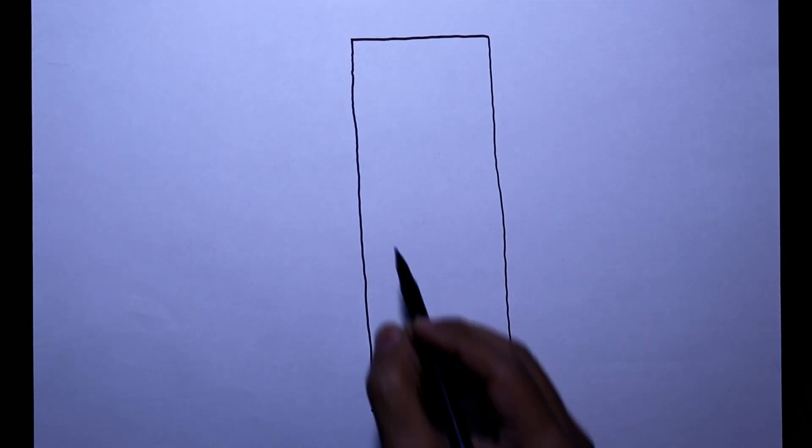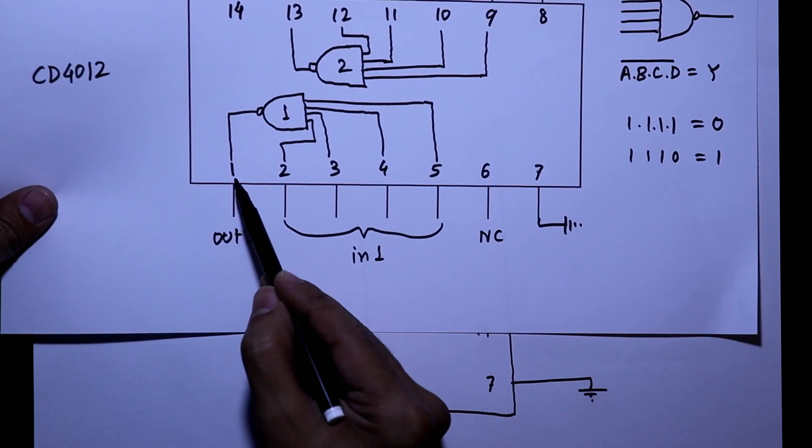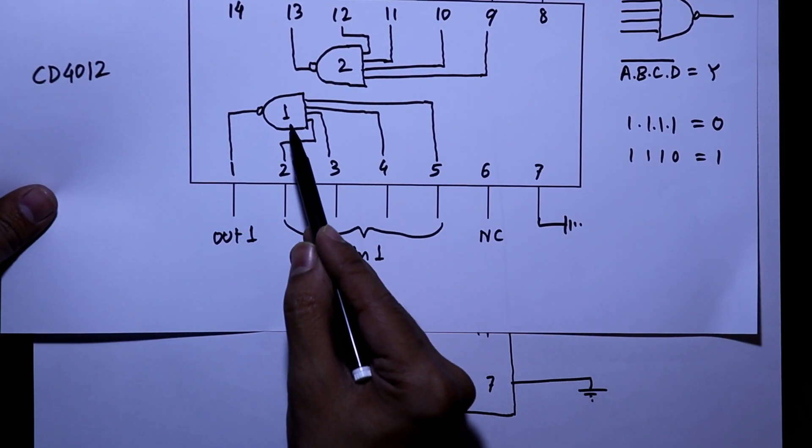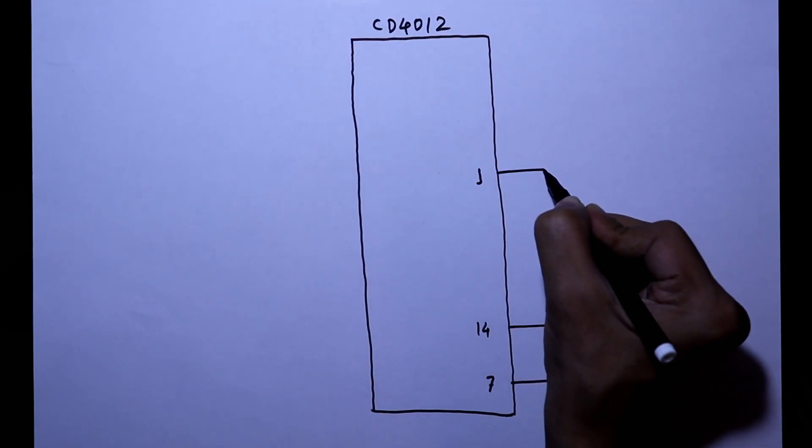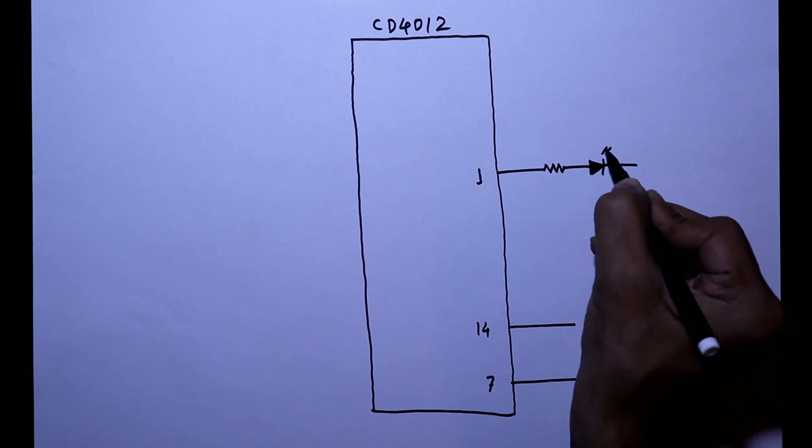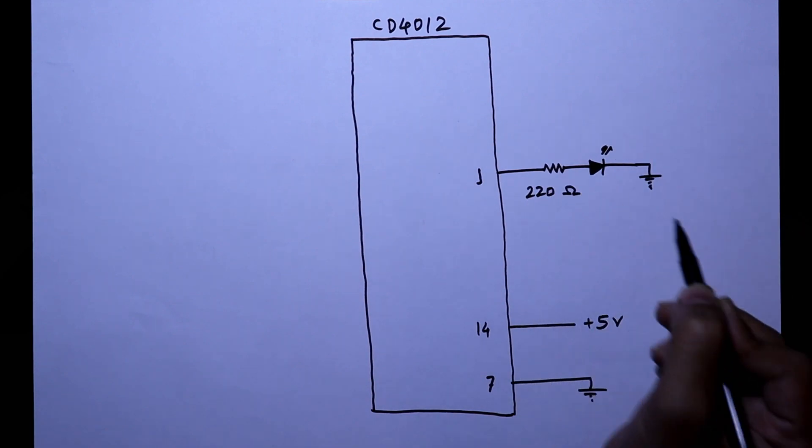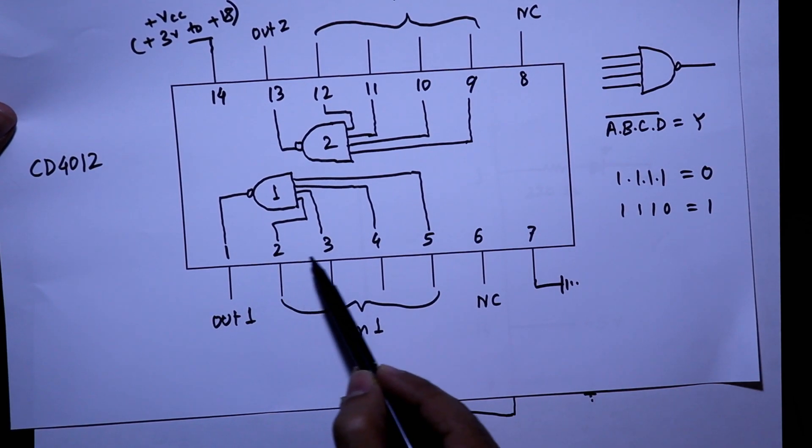Here is our IC. Pin number 14 to the plus 5 volt, pin number 7 to the ground. Pin number 1 is output of NAND gate 1, so with this we are connecting an LED to see the output. And we have to connect a series resistor, and the value is 220 ohms. And the inputs are 2, 3, 4, 5.